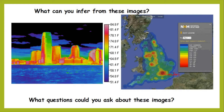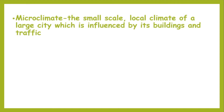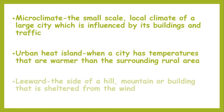Urban areas tend to have higher temperatures — their microclimate is warmer than the surrounding rural area. There are a few key terms we're going to be using today. Microclimate: the small-scale local climate of a large city, influenced by the city itself — the buildings, the traffic, all those vehicles give off heat from their engines, and air pollution from exhausts creates a warming effect. Urban heat island: the concept just discussed. And leeward: the side of a hill, mountain, or building that is sheltered from the wind — also used to describe where air descends, dries out and rain stops, sometimes called the rain shadow. Pause and write those three key terms down.